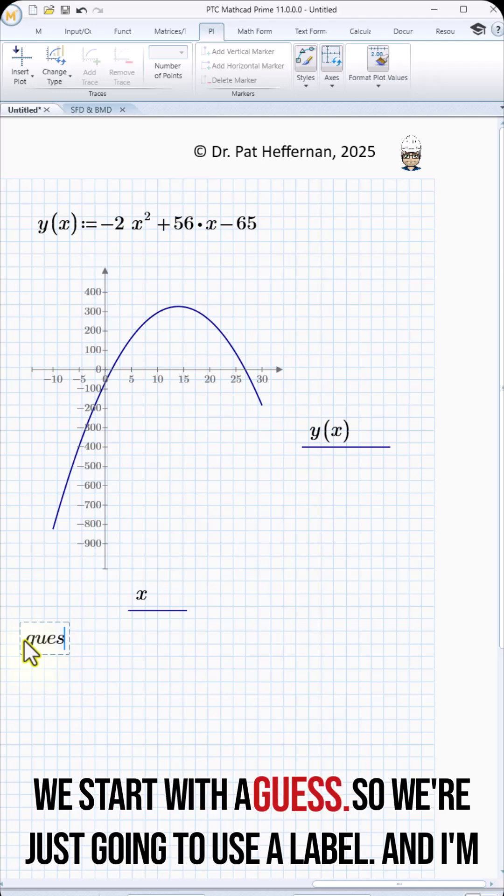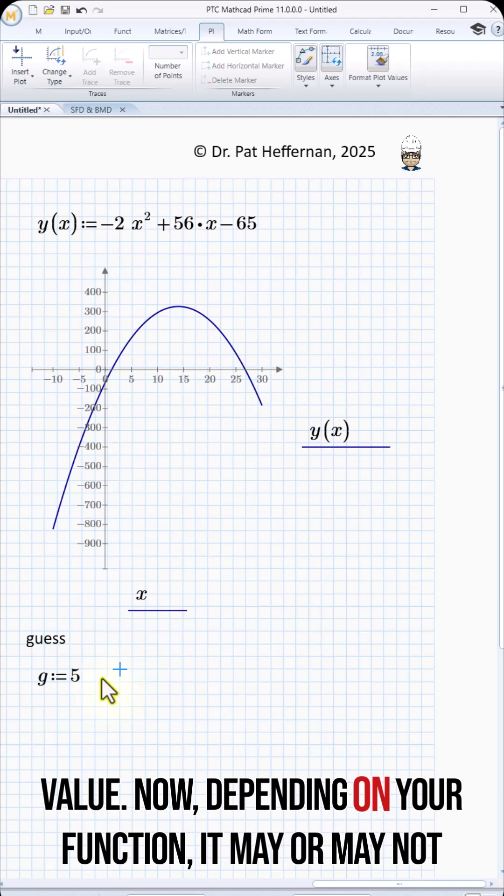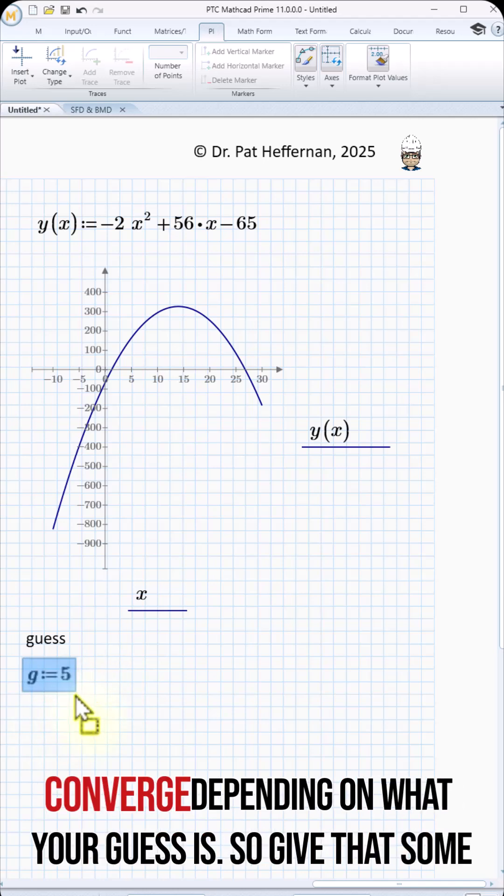So we start with a guess. We're going to use a label, and I'm going to use the variable g as my guess, and I'll set it to some value. Now, depending on your function, it may or may not converge depending on what your guess is, so give that some thought.